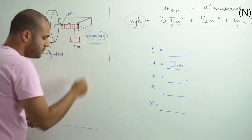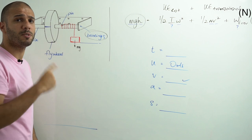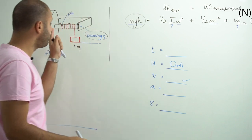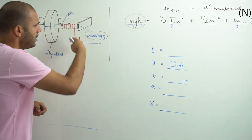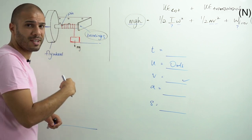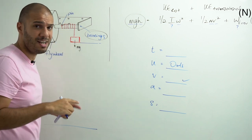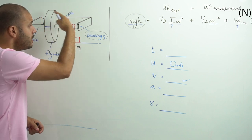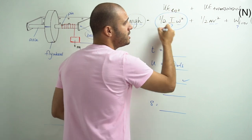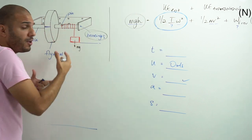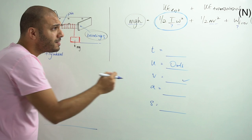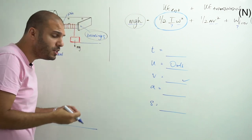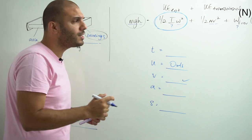Once the mass hits the ground, the flywheel will keep on spinning under its own energy. This is the main concept you need to understand: you're going to count the full number of revolutions until the flywheel comes to a stop. Once the mass hits the ground and the looped end detaches from the pin, the flywheel rotates under its own rotational KE. If the flywheel eventually stops — which it will — all of that energy has been used as work to overcome friction in the bearings, since it is only bearing friction that stops the flywheel.